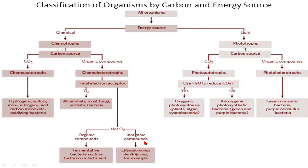Other than organic compounds, the electron acceptor can also be inorganic compounds like nitrates, sulfates, etc., with an example being Pseudomonas nitrificans. Now let's move on to phototrophs. Photoautotrophs can either emit oxygen or they don't — if they emit oxygen they are known as oxygenic, and if they don't release oxygen they are known as anoxygenic.